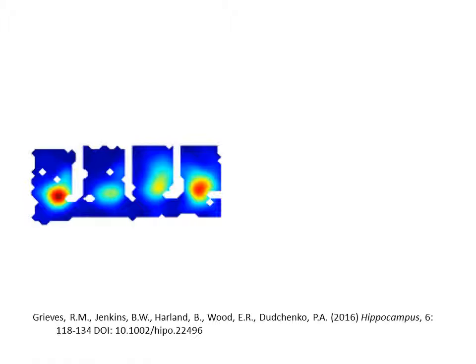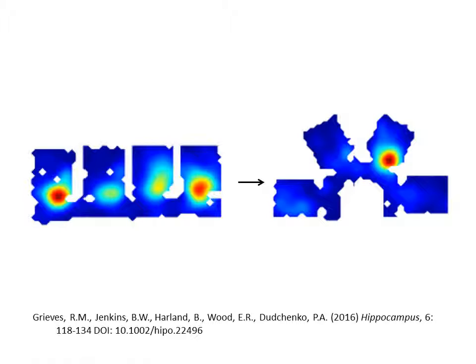However, when the same compartments face different directions, the same place cell would only fire in a single compartment. This suggests that place cells are sensitive to the direction of the local environments.